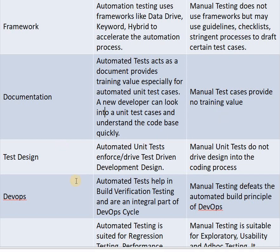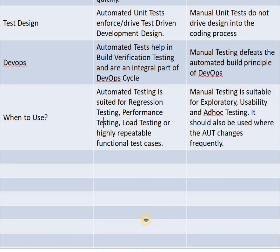Next parameter is test design. Automated unit tests enforce or drive test-driven development design, whereas manual unit tests do not drive design into the coding process. Also, automated tests help in build verification testing and are an integral part of the DevOps cycle, but manual testing defeats the automated build principle of DevOps.